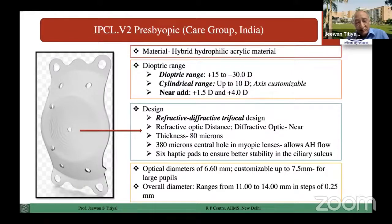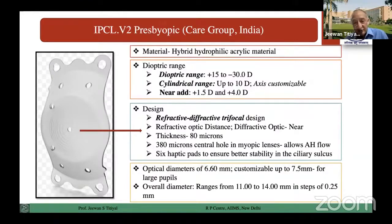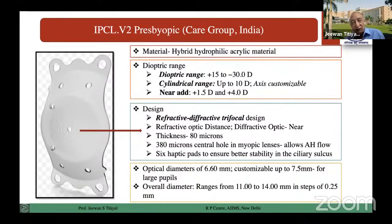The near add ranging from plus 1.5 to 4 diopters means it can cover a large range of age groups of people who come for refractive correction with phakic IOLs. So the new design is a sort of a trifocal design now — a refractive-refractive design. Apart from giving the advantage of distance, near, and intermediate correction, these lenses do have their own set of problems also because of the refractive-refractive design.